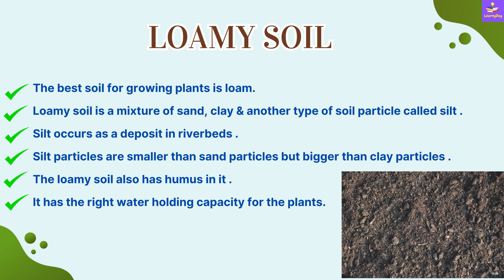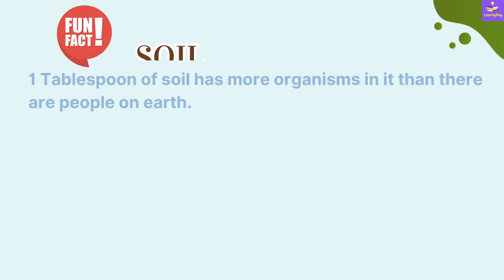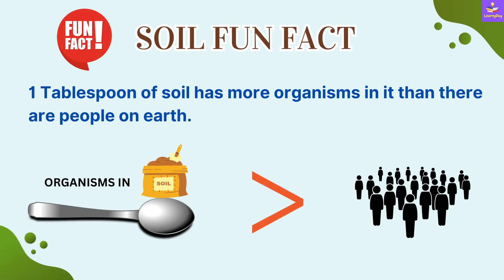Coming on to loamy soil — the best soil for growing plants is loam. Loamy soil is a mixture of sand, clay, and another type of soil particle called silt. Silt occurs as a deposit in riverbeds. Silt particles are smaller than sand particles but bigger than clay particles. Loamy soil also has humus in it and has the right water-holding capacity for plants.